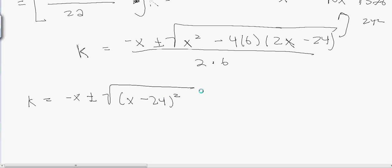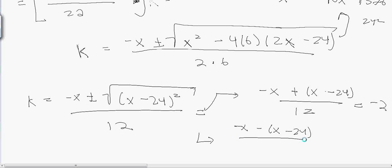From that, you can see k = (-x ± √(x - 24)²) / 12. And because this is the square root of a square, it's just x - 24. So there's two possibilities because it's plus minus. The first one is (-x + (x - 24)) / 12, which is -24/12 = -2.